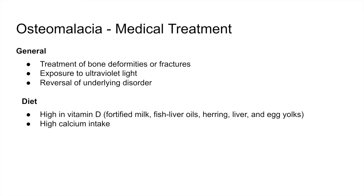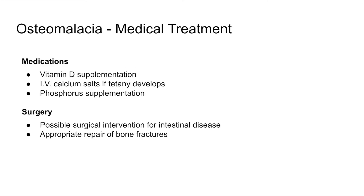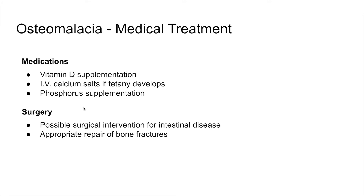Medical treatment of osteomalacia includes treating bone deformities or fractures, increasing ultraviolet light exposure, and reversing the underlying disease process. Diet should be high in vitamin D and calcium. Medications include vitamin D supplementation, IV calcium salts if tetany develops, and phosphorus supplementation — anything to increase the building blocks for strong bones. Surgery may be necessary for intestinal diseases to correct small intestinal absorption issues, along with appropriate repair of any bone fractures.